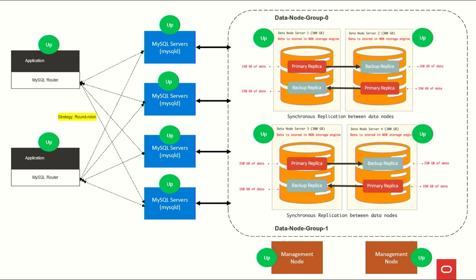This is the typical architecture for NDB cluster. The application connects to MySQL Router — and we can replace MySQL Router with any load balancer such as F5 or A10 — because MySQL Router is just for load balancing across MySQL servers. Unlike InnoDB cluster, which has primary and secondary roles, in NDB cluster there is no role distinction — everything is read-write, so we can simply load balance across all nodes.